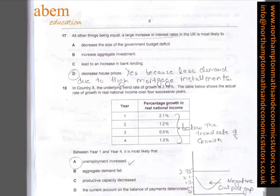In question seventeen, D is the answer: a decrease in house prices, probably because of an increase in interest rates. There is less demand due to high mortgage installments, so people will not take out mortgages.